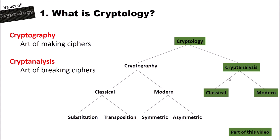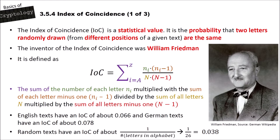What is the index of coincidence? The index of coincidence, abbreviated IOC, is a statistical value. It is the probability that two letters randomly drawn from different positions of a given text are the same. The inventor of the index of coincidence was William Friedman, and he invented it to break polyalphabetic ciphers, like the Vigenère cipher.